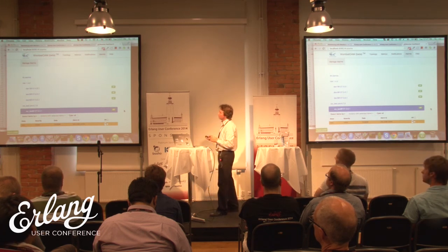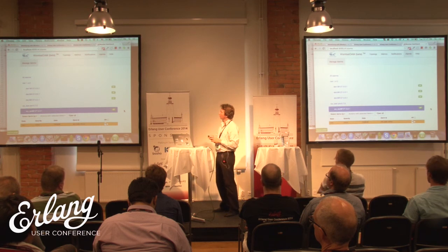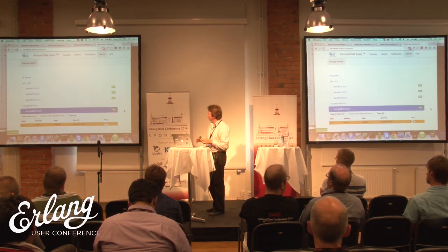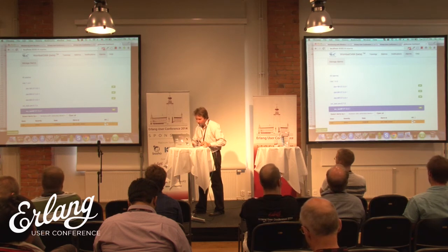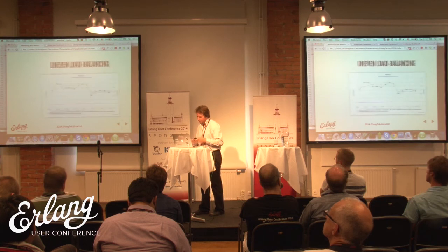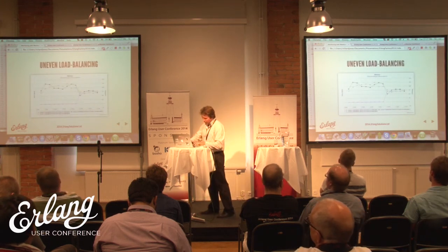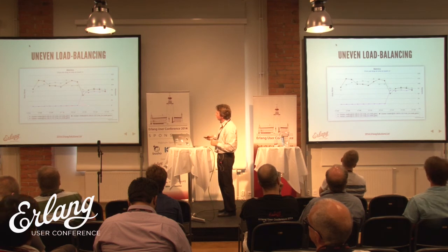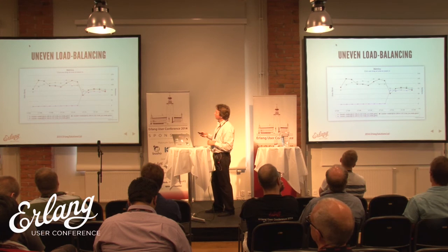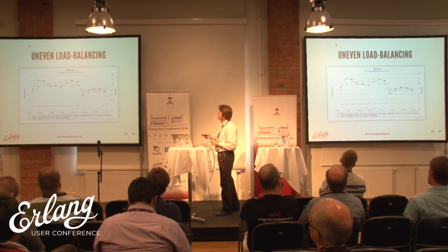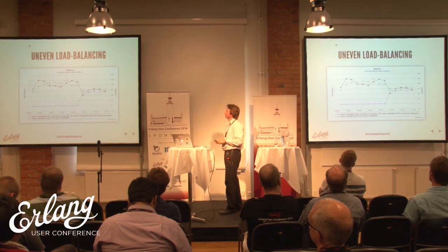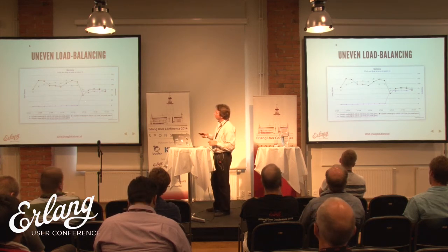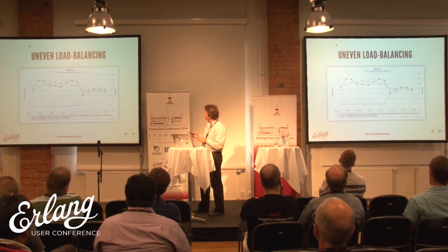We can also detect uneven load balancing. If for some reason node three doesn't get any get requests, we can easily spot that out because each node should have a fair number of gets but one has zero. Now I rewrote the script to put some load on each node and everything is normal again.